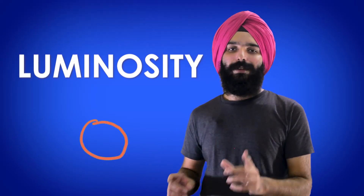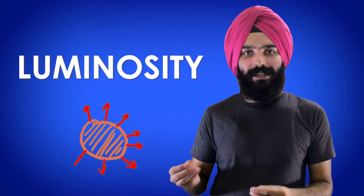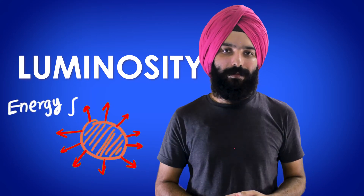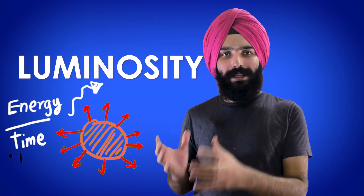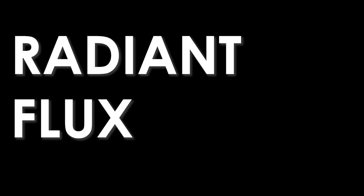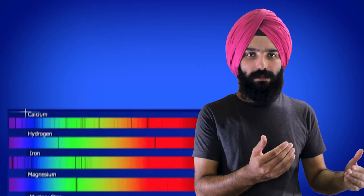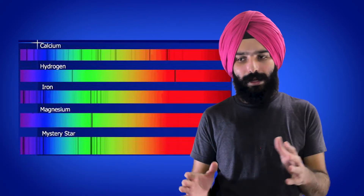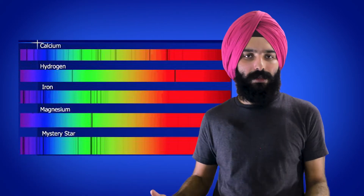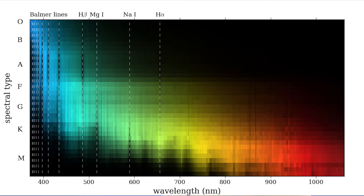This brings us to luminosity, which is the energy radiated by a star per unit time. Dividing this by the area also gives us the radiant flux, which is another great measure of a star's intrinsic brightness. Finally, the temperature of a star refers to its surface temperature, which can be calculated by looking at its absorption spectra. Different stars show different lines in the absorption spectrum, and studying them carefully gives us information about the star's internal composition and temperature.